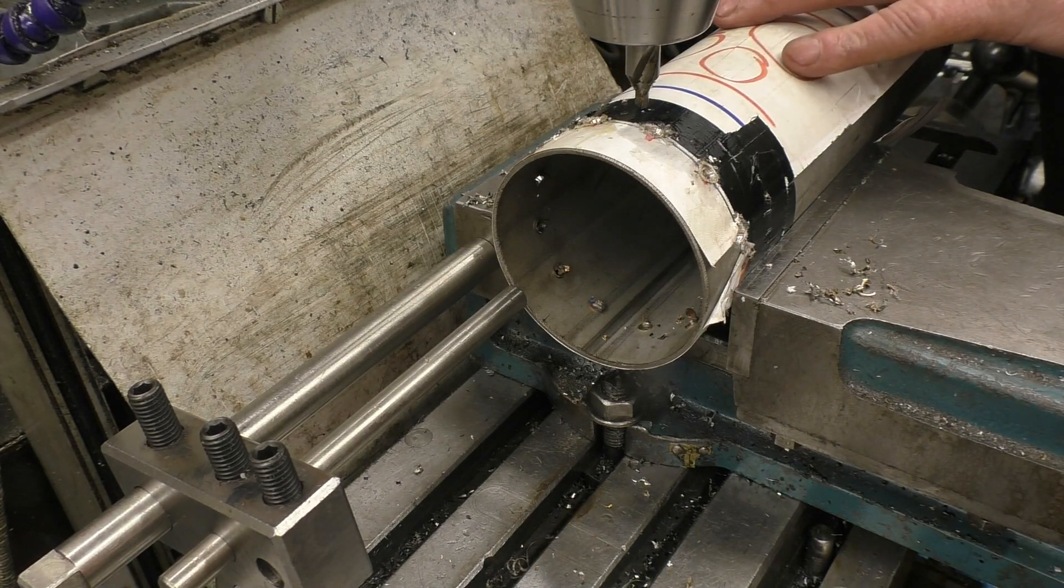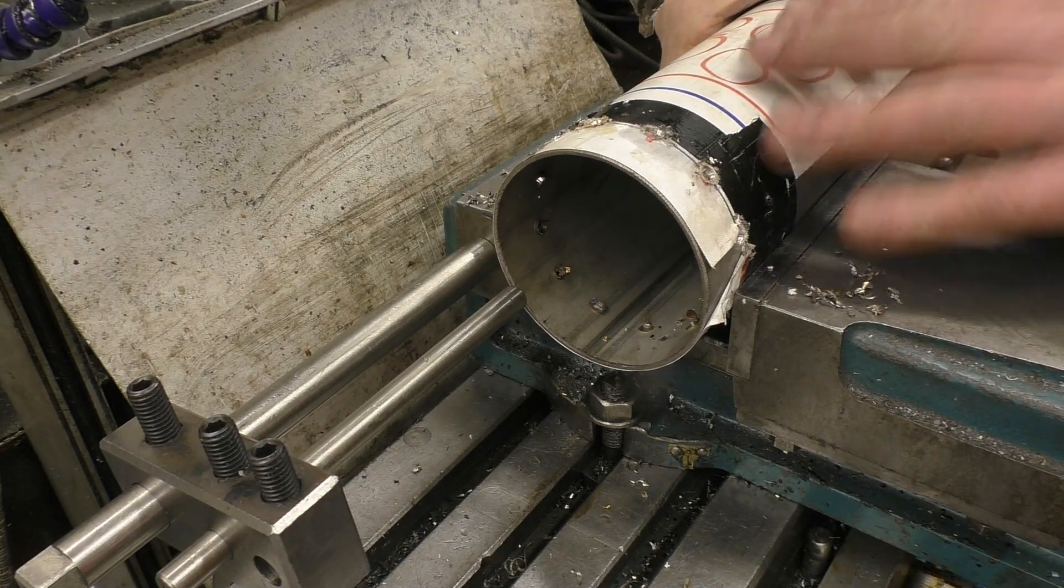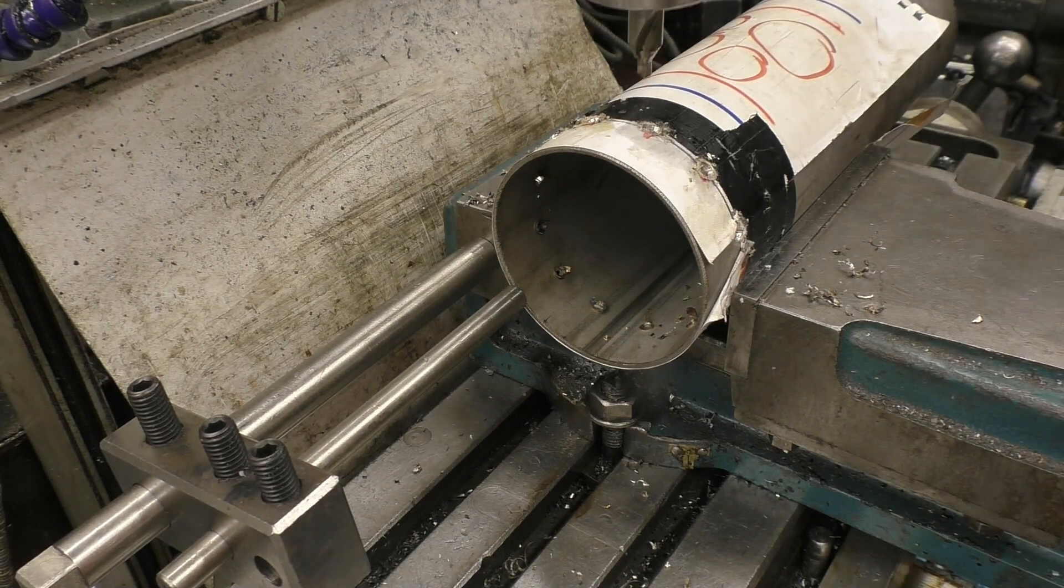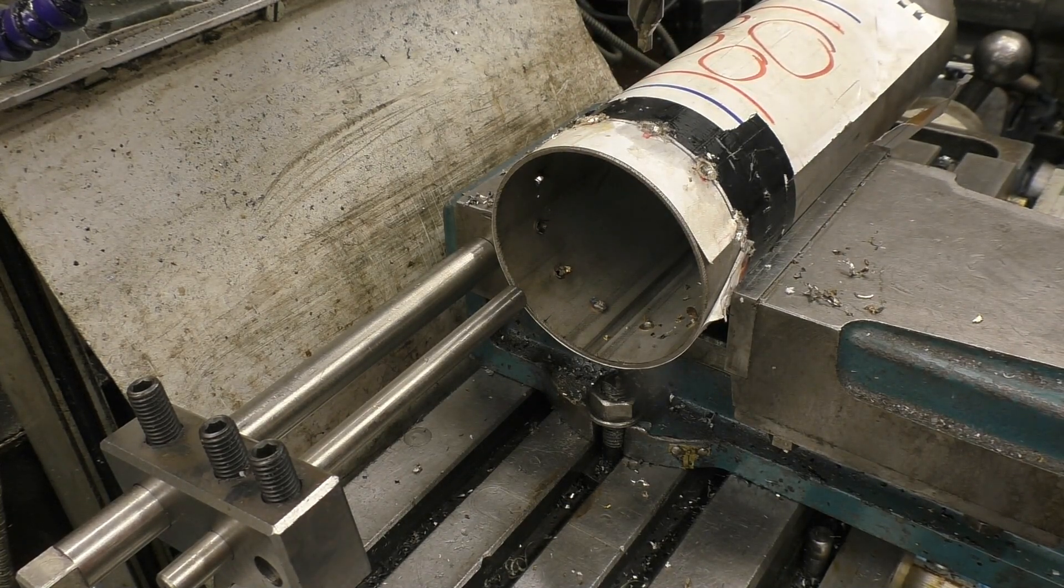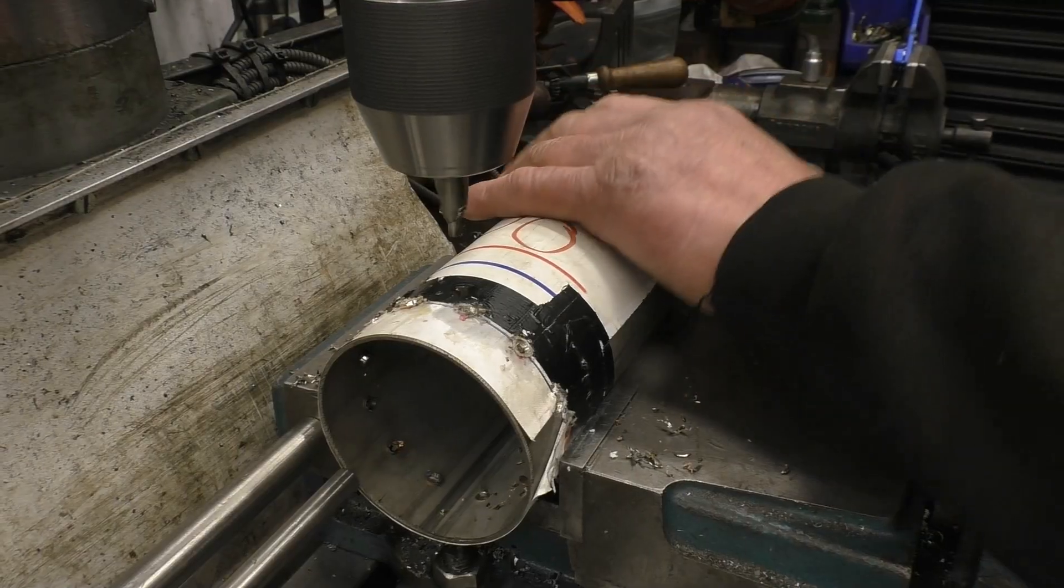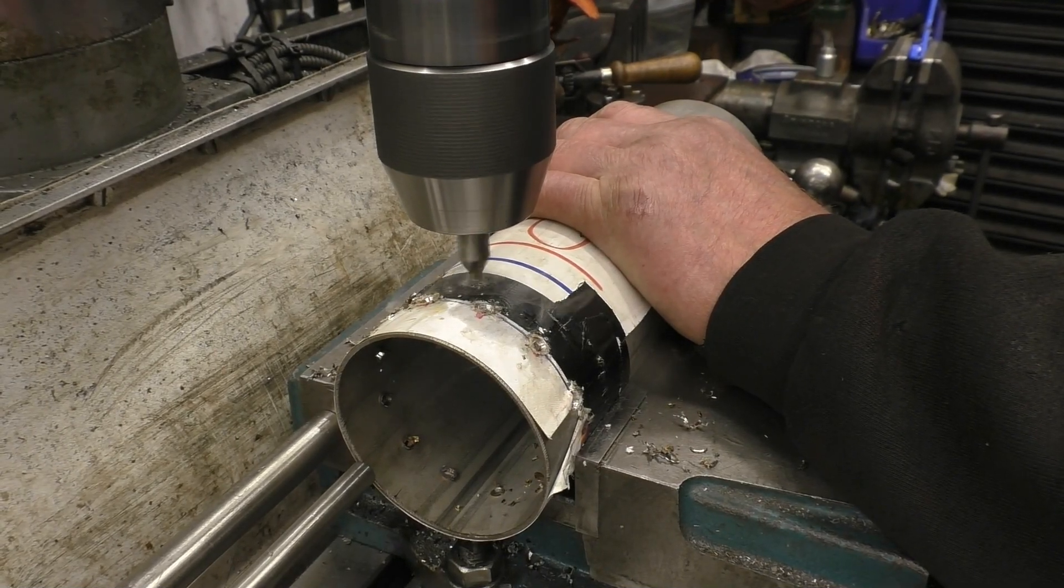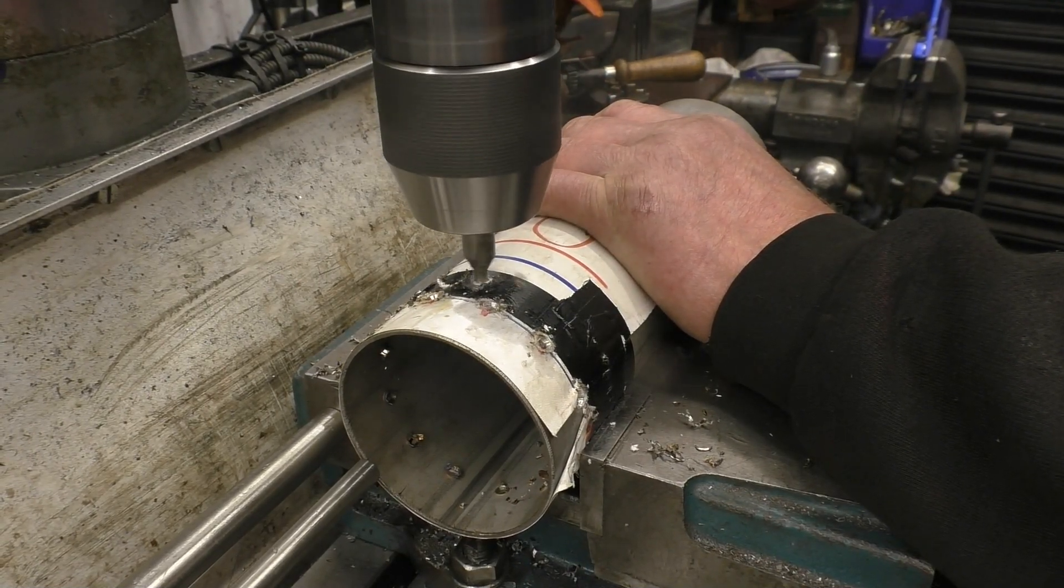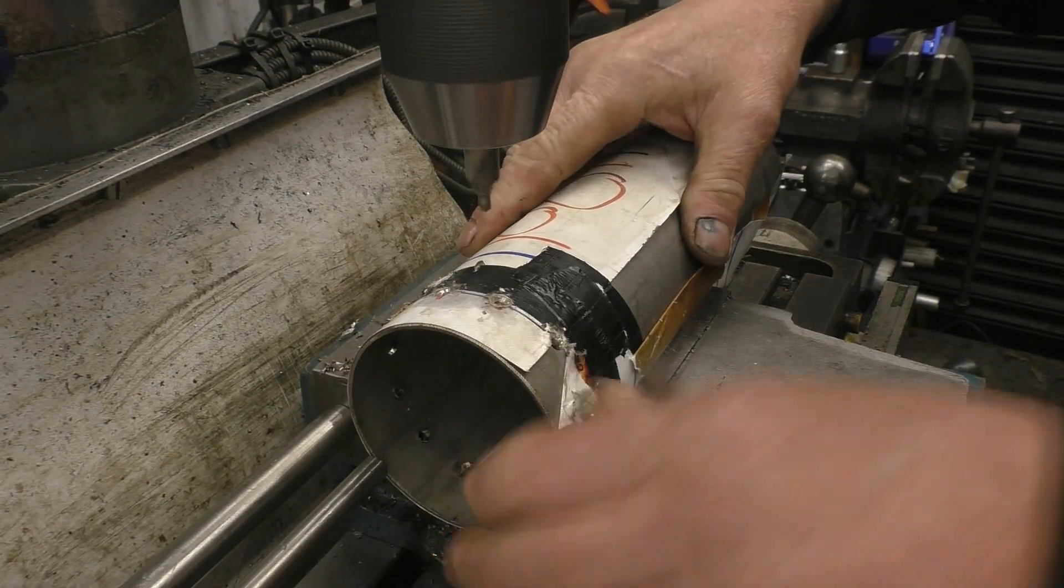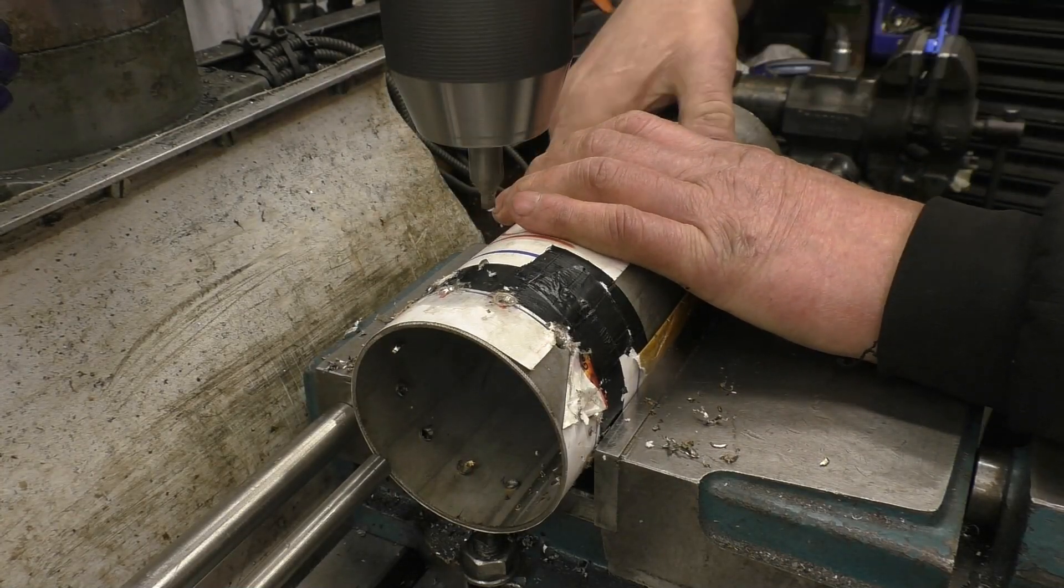Eyeballing is certainly near enough for this because the air is not going to circulate around and think this hole's half a mil out of line, I cannot go through there. It will work. It's actually starting to blunt the center drill, so I think I could have a little bit of a drill in the bigger holes.